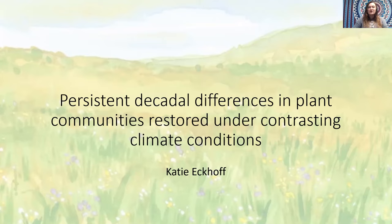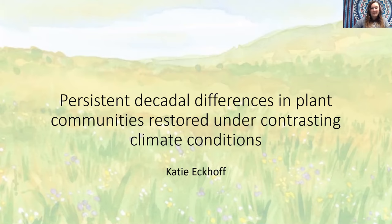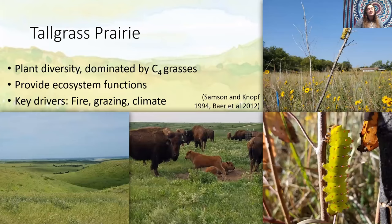I'm going to be talking about persistent decadal differences in plant communities restored under contrasting climate conditions. Tallgrass prairie supports a large diversity of plant species and is dominated by C4 grasses. It provides a wide variety of ecosystem functions, including primary productivity, nutrient cycling, and habitat for wildlife. Frequent fire, grazing by large mammals particularly bison, and drought are primary drivers of plant communities, keeping prairies dominated by C4 grasses and reducing woody encroachment.